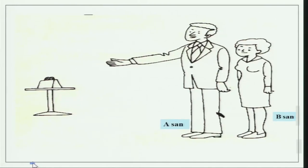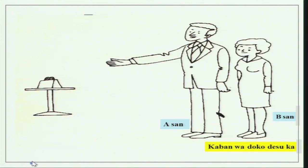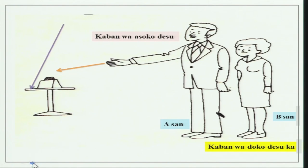Two people in the picture — a gentleman and a lady talking. He is pointing at an object. The lady asks: kaban wa doko desu ka? He says kaban wa asoko desu. Or more specifically: kaban wa tsukue no ue ni arimasu. This is practice again and again for arimasu, which is very important — it is a proper verb and we cannot keep using desu instead of arimasu.